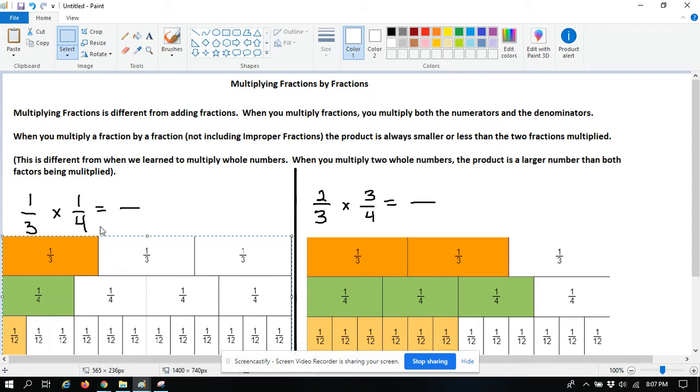When you multiply fractions, you multiply both the numbers on top or the numerators and the numbers on the bottom, the denominators.